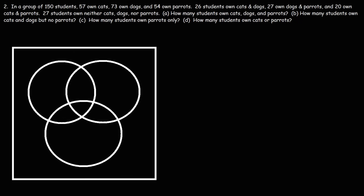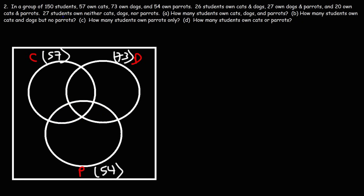Now let's work on another problem. In a group of 150 students, 57 own cats, 73 own dogs, and 54 own parrots. We'll use C for cats, D for dogs, and P for parrots. 26 own cats and dogs, 27 own dogs and parrots, and 20 own cats and parrots. 27 students own neither cats, dogs, nor parrots. How many students own cats, dogs, and parrots? We don't know that, so we'll call it X.